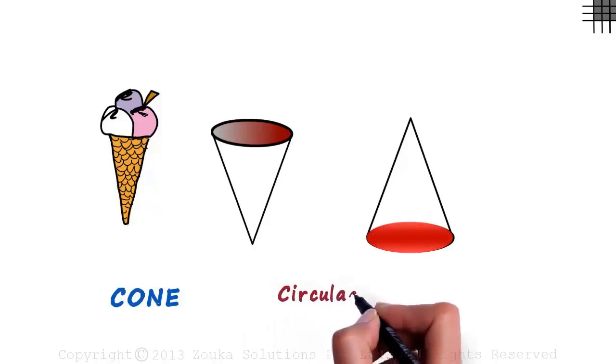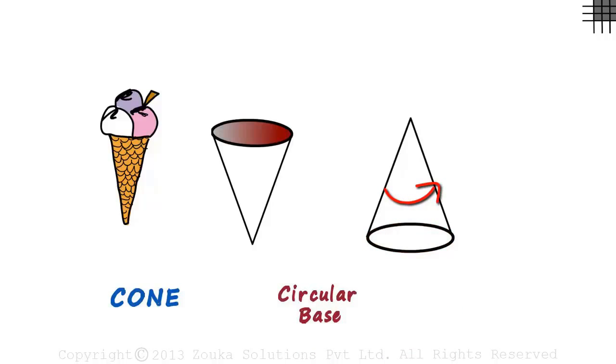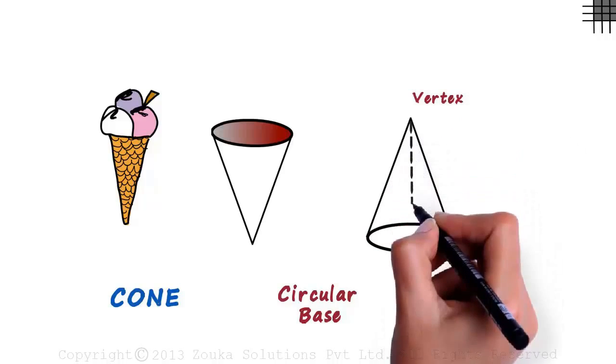The cone has one circular base and a slant curved surface. The slant curved surface begins at the vertex and grows towards the base.